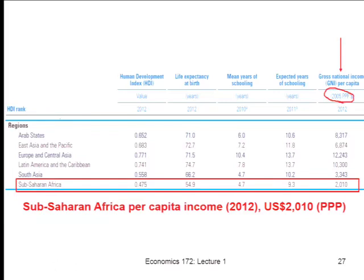PPP means we're doing the best we can to adjust for the fact that things cost different amounts in different countries — in other words, prices are different. Anyone who's traveled will know that a Coke in the Oslo airport might cost $12. Prices are just much higher in Oslo than in Berkeley. In contrast, if you go to rural Kenya, you can get a pretty good meal for 40 or 30 cents. There are massive differences in prices around the world. Statisticians have collected prices for nearly every country and these PPP-adjusted incomes try to control for those price differences as best we can.